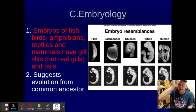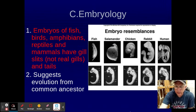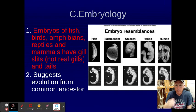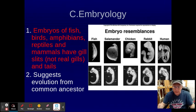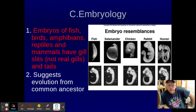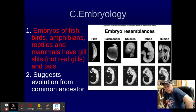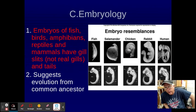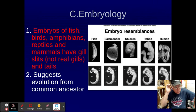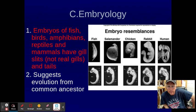Let's look at embryology. You can see here that especially in the beginning — here's a fish, salamander, chicken, rabbit, human — there's not a lot of connections today with their ancestral trees, but yet if you look at the early-stage pictures, we have a tail, we have gill slits. We look very, very eerily similar. And why is that? Because of a common ancestor type of thing.